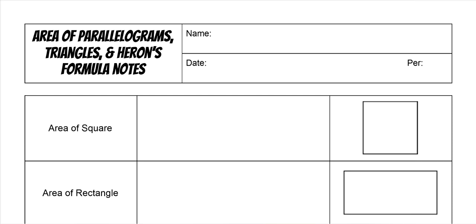Today we're going to go over area of parallelograms and triangles, and then we will also use Heron's formula to figure out area of triangles where you're not given the height.